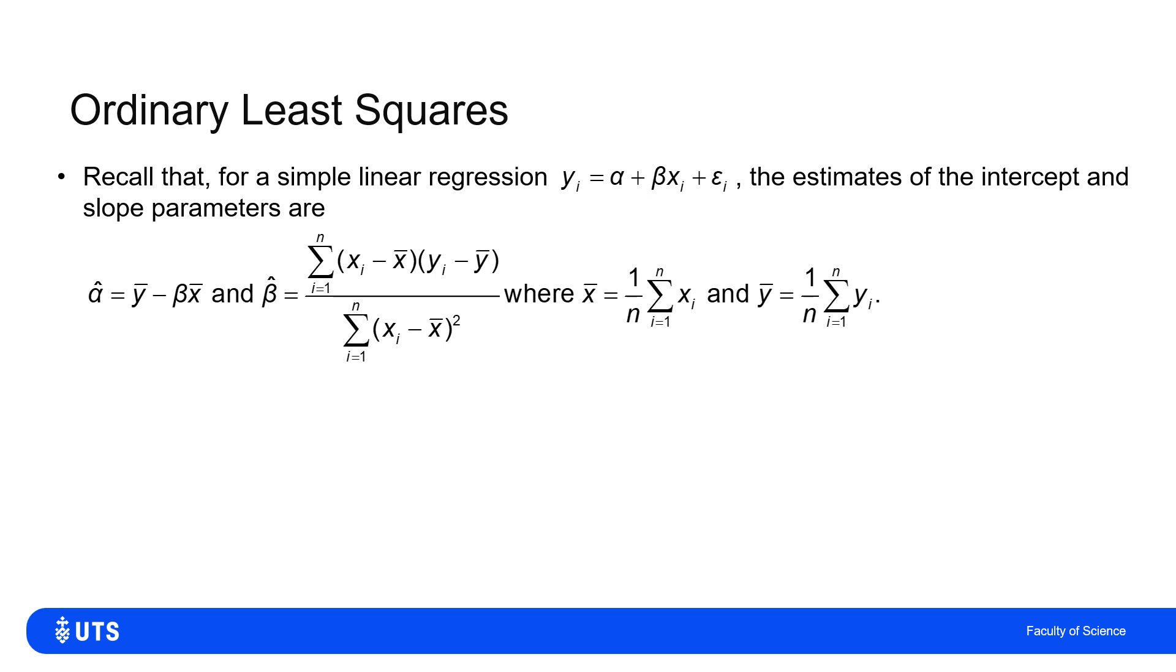ȳ minus β̂x̄, and I would estimate that β with β̂ being this sum of the (xi - x̄)(yi - ȳ) divided by the sum of the (xi - x̄)². So if I do this with a set of observations of x,